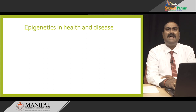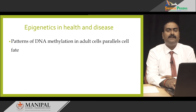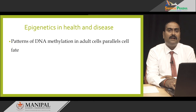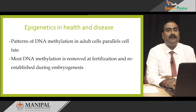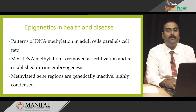What is the role of epigenetics in health and disease? First we need to know what epigenetic changes are happening. Generally, patterns of DNA methylation in adult cells parallel cell fate — whatever would be the fate of the cell, that particular cell would have a different type of methylation. So each adult cell with a different fate will have a different methylation pattern. This methylation pattern is established only during embryogenesis. In the gametes or during fertilization, all of the methylation is removed and then re-established during embryogenesis. Methylated genes are genetically inactive and are much more condensed.